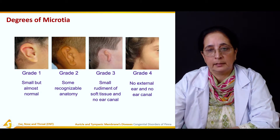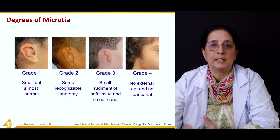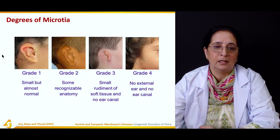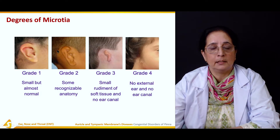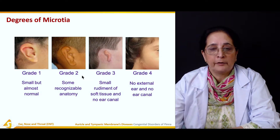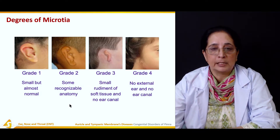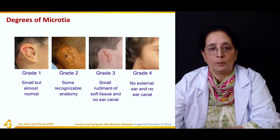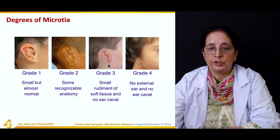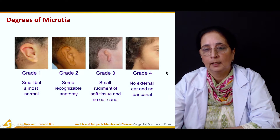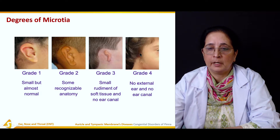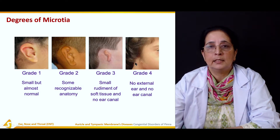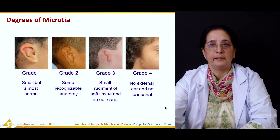There are different degrees of microtia. In Grade 1, the ear is smaller than normal but almost normal in structure and function, with an auditory canal, lobule, and pinna present. In Grade 2, there is some recognizable anatomy similar to a normal ear. In Grade 3, there is only a small rudiment of soft tissue with no ear canal. In Grade 4, there is no external ear and no ear canal — this is the most severe type.